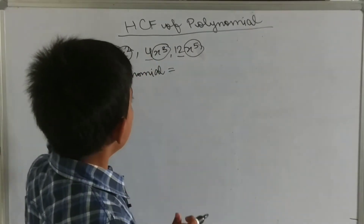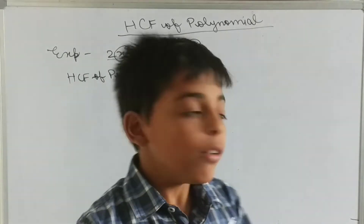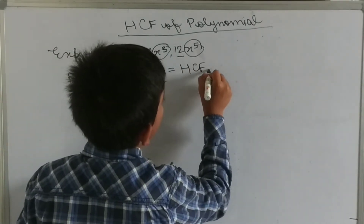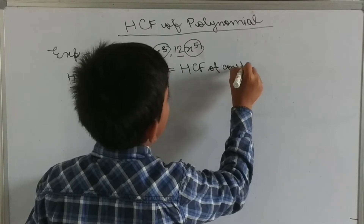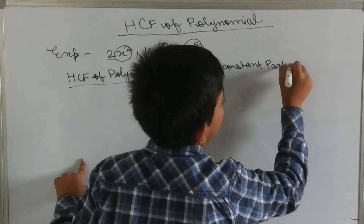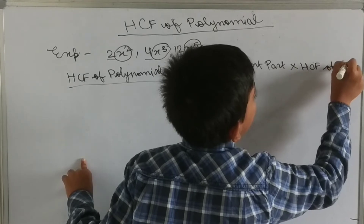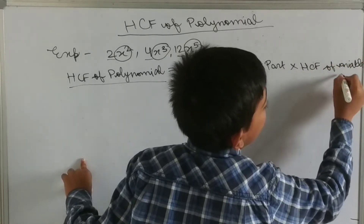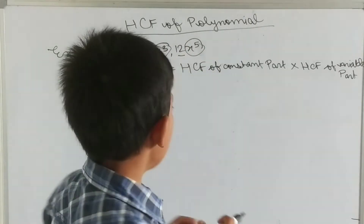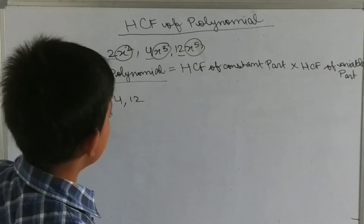So first we have to find the HCF of the constant part and then the HCF of the variable part, and the product of them will be the HCF of the polynomial — that is, HCF of constant part multiplied by HCF of variable part. So first we separate the constant part, which is 2, 4, and 12. We have to find the HCF of 2, 4, and 12.